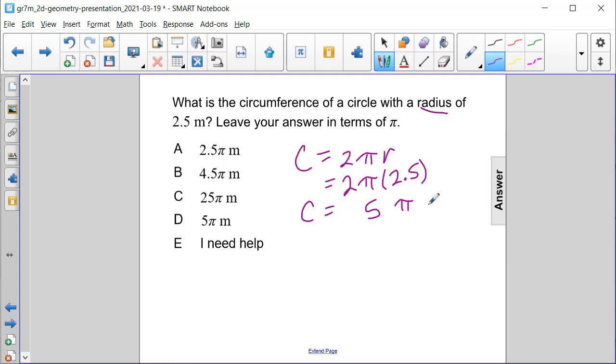So our circumference will be five pi meters, or answer choice D.